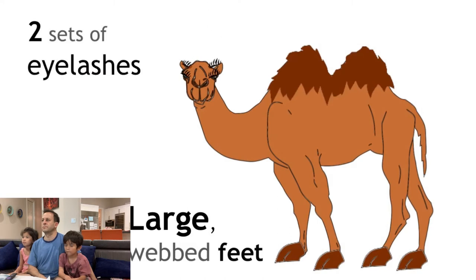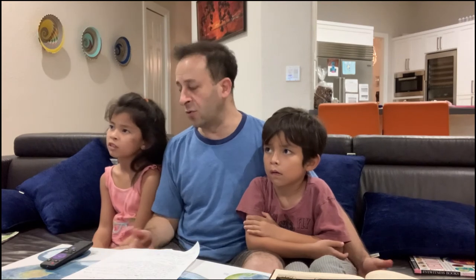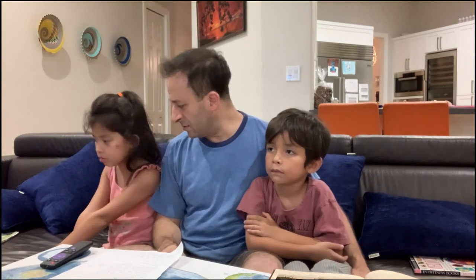Another important difference between camels and the hippo we talked about last time is that both camels and llamas have been domesticated. Domesticated means humans took the animals and basically got them used to being part of human society — humans use them for various purposes, and the animals depend on humans for food and to live, and really could not survive without humans. Other examples of domesticated animals include dogs, horses, and all the animals you find on a farm: cows, chickens, sheep, goats, and cats.